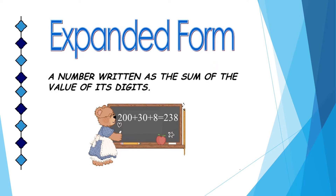Expanded form: when we represent a number as the sum of the value of its digits, it is called the expanded form. For example, 238 can be written as 200 plus 30 plus 8.